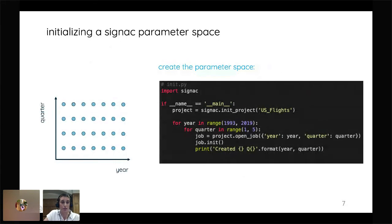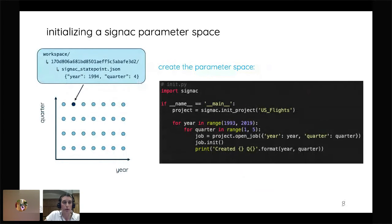So what this for loop would do is create a data structure or a workspace that looks something like this where you have each of these would be each of these points would be a directory within your workspace and they are varying over a year and then over quarter. And we specifically separate quarters from years because the way that the data is analyzed depends on which quarter the data is from. So for example, if we would go into one of these directories, let's say this is its hash ID. So this would be the name of the directory and then the JSON file within that directory would just contain the dictionary year 1994 and quarter 4.